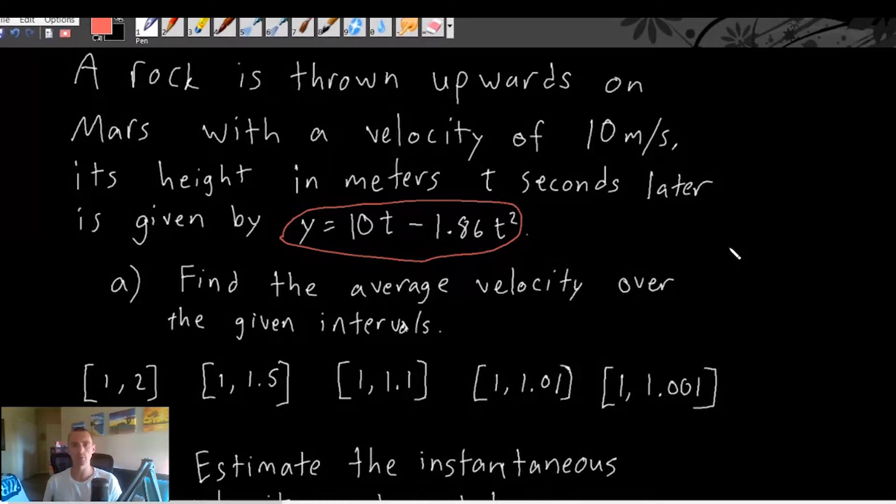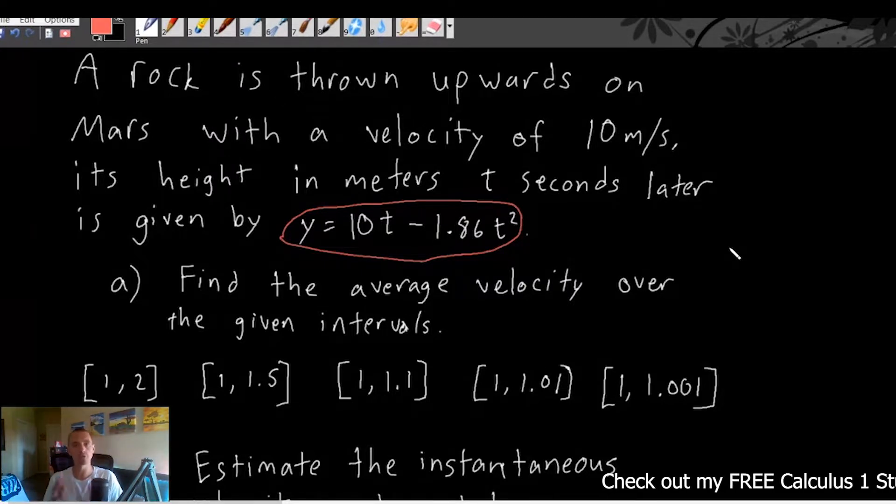Average velocity is always gonna be talking about the, well, I mean, I guess it's in the name, but the average velocity or the average speed that an object is moving over a period of time.